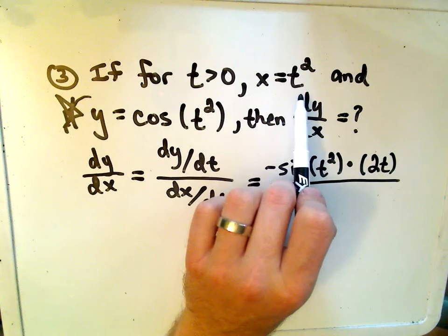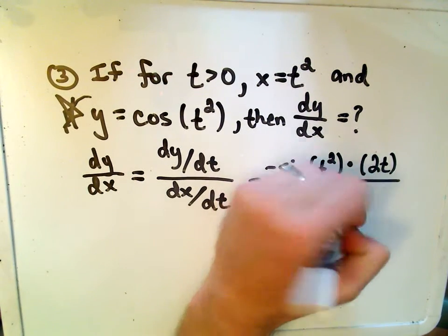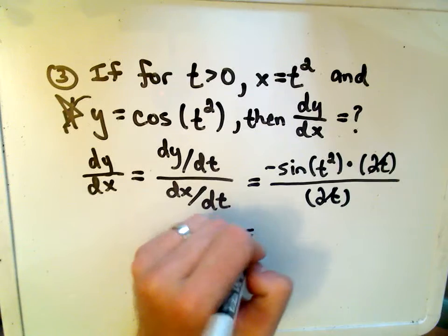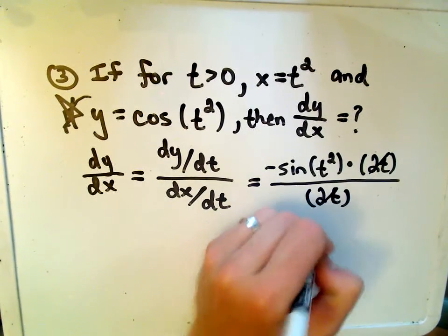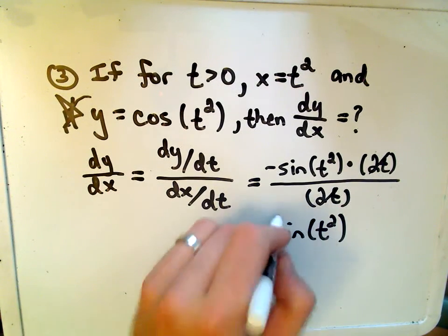Well, the derivative of the denominator, t squared, will also just be 2t. Those will simply cancel out, and it looks like we're left with negative sine t squared. That will be your answer.